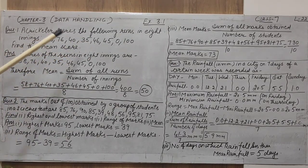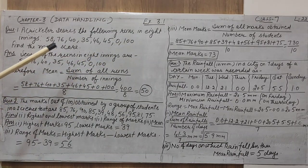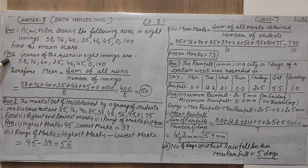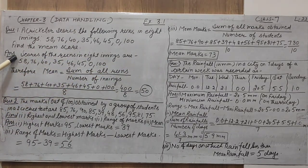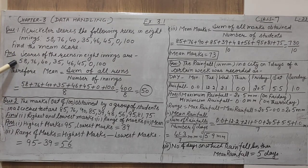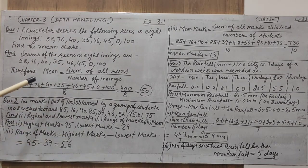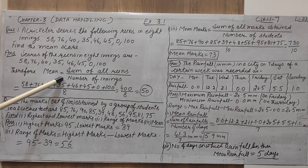Find out the mean score of these runs. The data can be given in the form of marks, or runs, or any other form — but here all values are runs of the innings. So the answer: scores of the runs in 8 innings are 58, 76, 40, 35, 46, 45, 0 and 100.